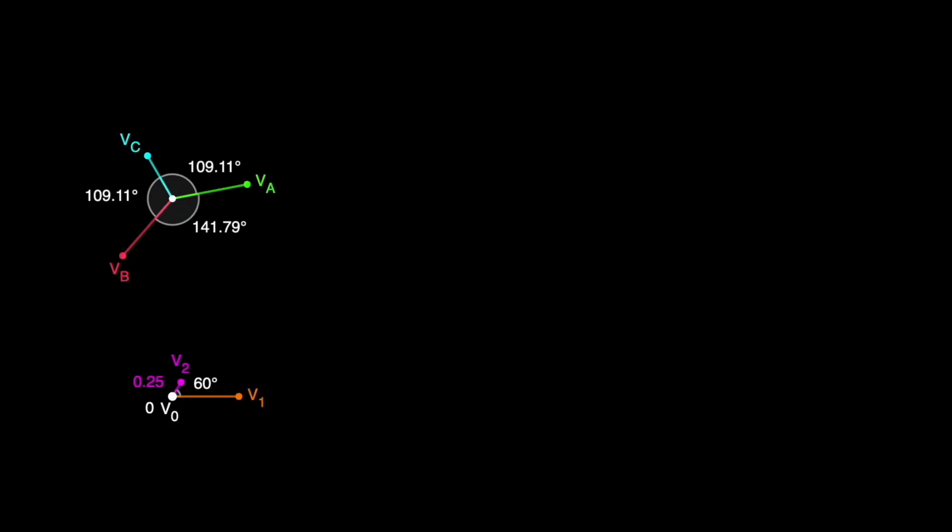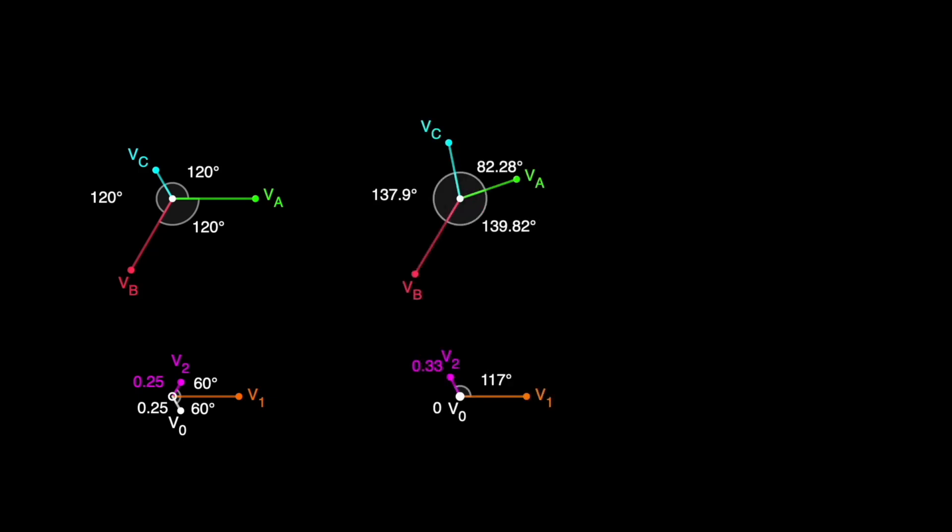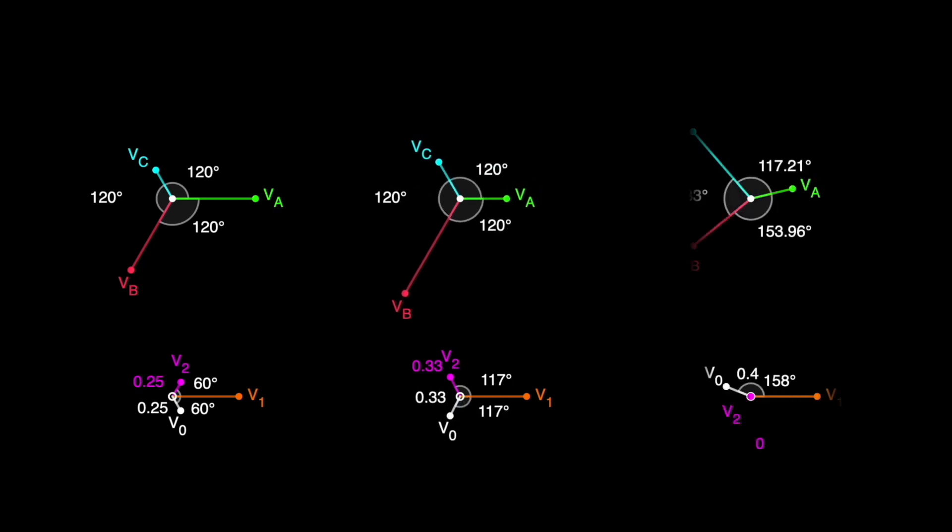In this scene, I'd like you to pay close attention to the angles of the ABC phasors and the angle and magnitudes of the zero and negative sequence components. Note that in the various examples shown here, the ABC phasor angles always have exactly 120 degrees separation when V0 and V2 have the same magnitude and angle with respect to V1.